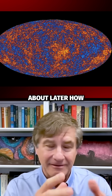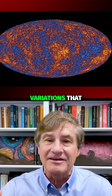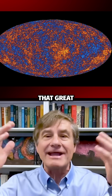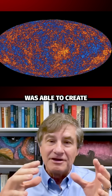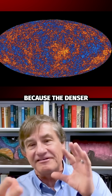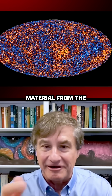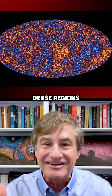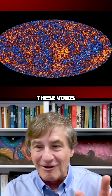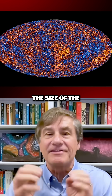— we can talk about later how they were imprinted there. But it's from these tiny density variations that gravity, that great sculptor of the universe, was able to create galaxies and clusters of galaxies containing stars. Because the denser regions would gravitationally contract, and they would steal material from the less dense regions.